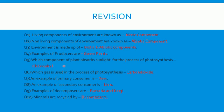Now we will start revision. I have given you some questions and answers — check yourself whether you know the answers or not. Question 1: living components of environment are known as — answer is biotic component. Question 2: non-living components of environment are known as — abiotic component. Question 3: environment is made of the biotic and abiotic components together. Question 4: examples of producers — producers are the green plants, which prepare food by the process of photosynthesis.